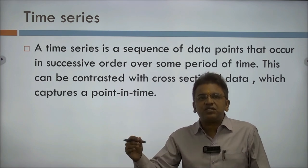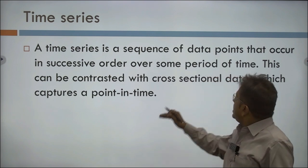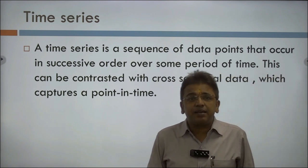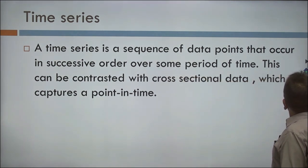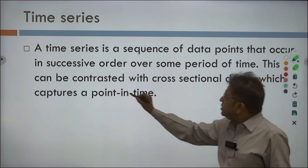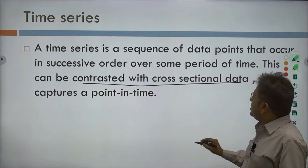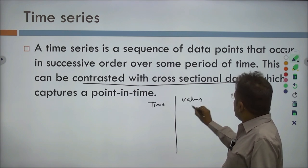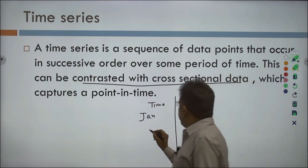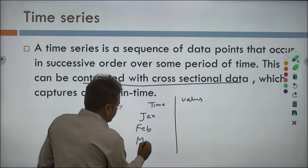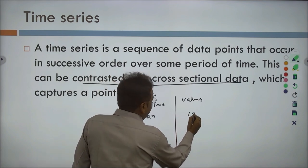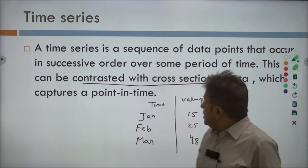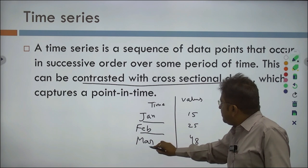Every time you have a specific value at a specific time. This can be contrasted with cross-sectional data, which captures a point in time. You have time and different values — for example, January, February, March with values 15, 25, 48. This is a time series where each value has a different time frame, a different month.